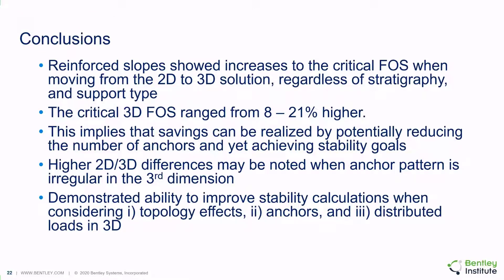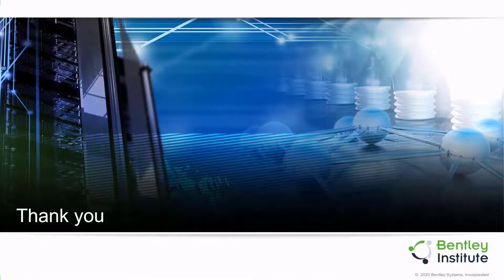In summary, it was demonstrated that there are increases to the critical factor of safety when moving from a 2D to a 3D solution, regardless of the stratigraphy and support type. The critical 3D factor of safety increases over the 2D factor of safety between 8% to 21%, implying an economic savings in slopes from a lower anchor requirement when the problem is analyzed in 3D. It is possible that even higher 2D versus 3D differences may be noted if the anchor pattern is irregular in the third dimension. This set of models demonstrates the ability to improve stability calculations when considering topography effects, anchors, and distributed loads in a full 3D model. Thank you — this concludes the video on anchors and loading conditions in 3D.